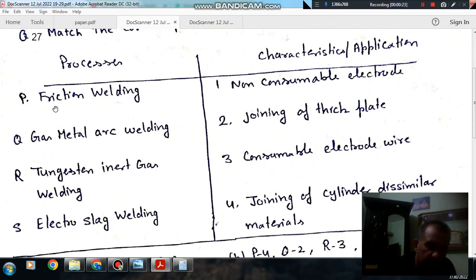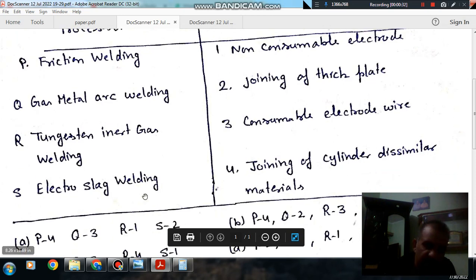First column is friction welding, Q gas metal arc welding, R tungsten inert gas welding, S electro slag welding.